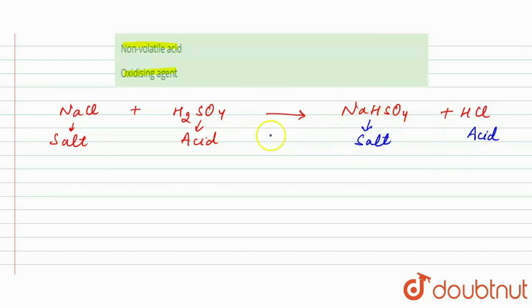So which property is being used here? If we see, H2SO4 is non-volatile acid. It is non-volatile because it stays stable.